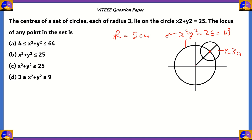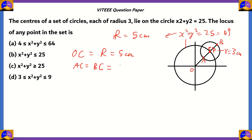Let's take the center of the larger circle as O and the center of the smaller circle as C. The locus of any point in the set can be calculated by finding the distance OP, where P is any point on the smaller circle. We can take A and B as the points on the diameter of the smaller circle, where the diameter is concordant with the distance between O and C. So the value of OC is equal to capital R, which is 5 centimeters, and the values of AC and BC are the same, which is 3 centimeters.